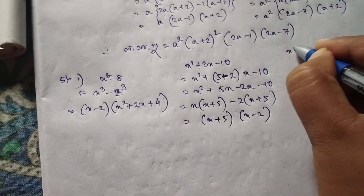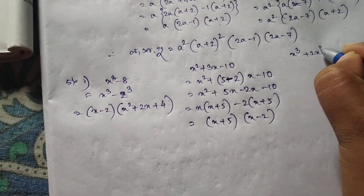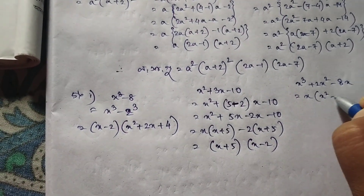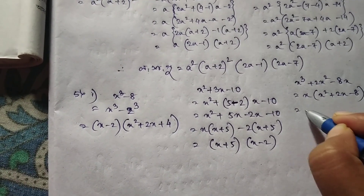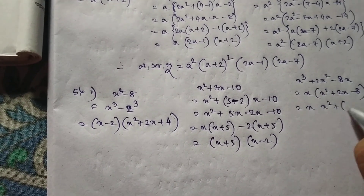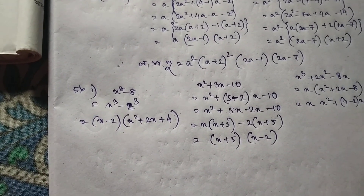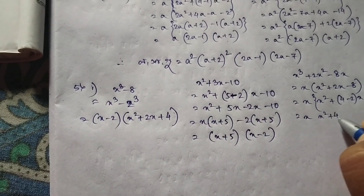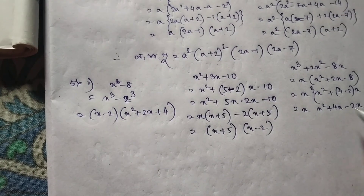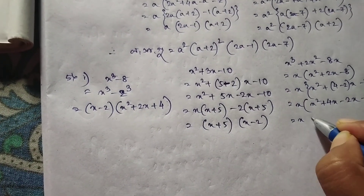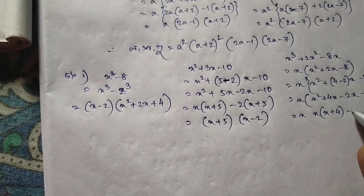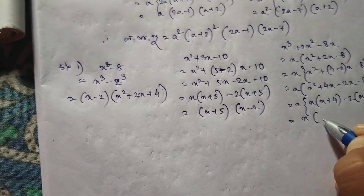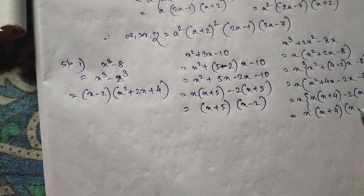x cube plus 2. x squared minus 8. x common is x squared plus 2, x minus 8. x squared plus 4, minus 2, x minus 8. x common is x squared plus 4, x minus 2, x minus 8. x plus 4, minus 2. x plus 4. x plus 4, x plus 4, x plus 4. x times x plus 4, x minus 2.